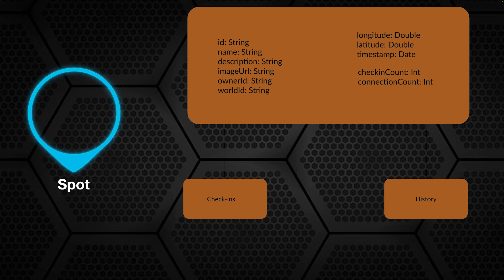The Spot model has two subcollections. Check-ins contains all users who are currently checked into that location in real time. History contains all users who have ever visited that location. The key difference: check-ins is real-time presence, while history is a complete record of everyone who has ever been to that spot. All this data is stored in those subcollections.